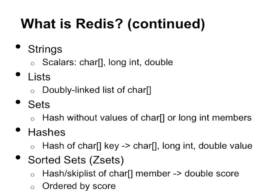Redis also has sets — really hash tables without values, generally of character string or long int members. Within sets you get support for all the nice set math operations: intersections, unions, and differences. For short sets where all members are long ints, you can actually store them as an array as opposed to a hash, which gives you better memory use and similar performance characteristics.